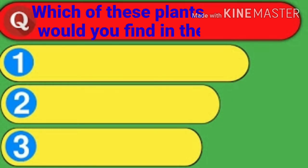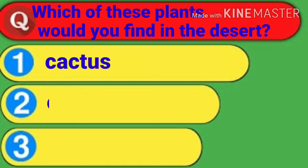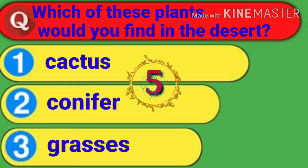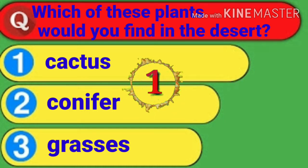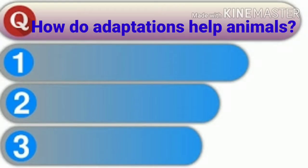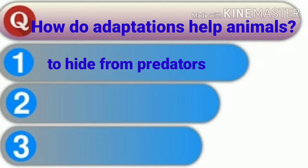Which of these plants would you find in the desert? Number one: cactus. Number two: conifer. Number three: grasses. You have five seconds to try yourself. The answer is cactus.